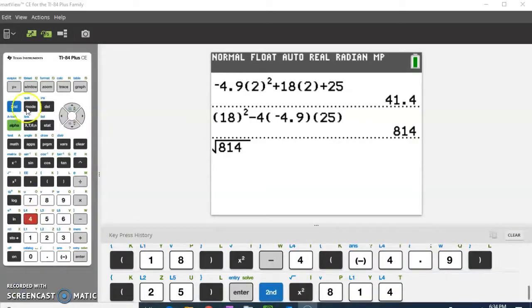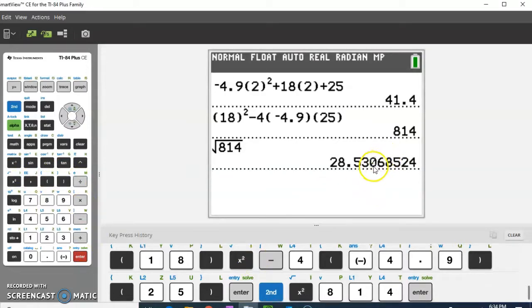All right, so the square root of 814 I did by hitting second in the x square. That gave me that square root. And I hit enter, and I get that number. I'm not going to put all of that in. Because right here it looks like it kind of falls off, I'm just going to use 28.53 as the number that I used for the square root of 814.